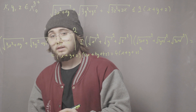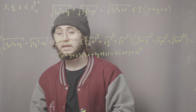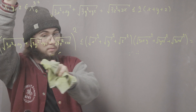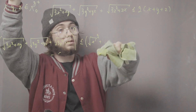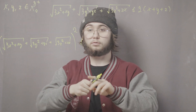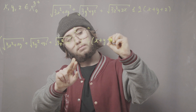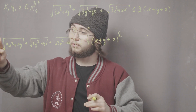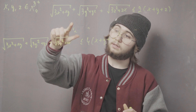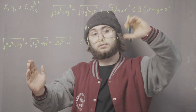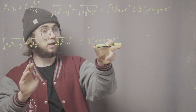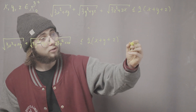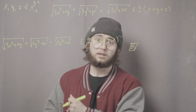Taking the square root of both sides, we get that the left-hand side is less than or equal to √(4(x+y+z)²) = 2(x+y+z), which is exactly what we were supposed to prove.